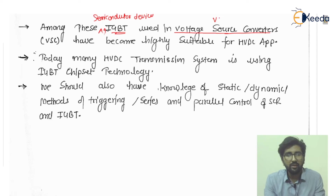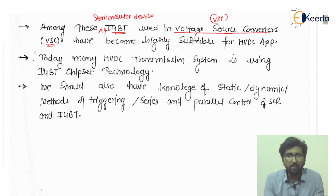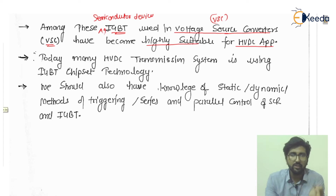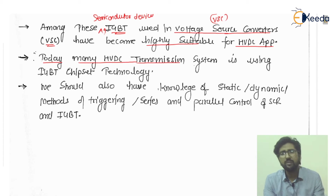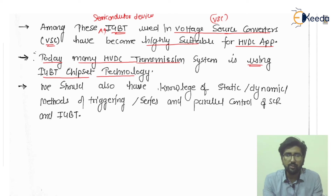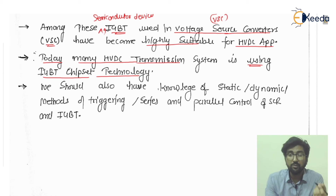In the voltage source converter, that is the VSC, the IGBT has become highly suitable for HVDC applications. Today, many HVDC transmission systems are using the IGBT chipset technology, due to its advantages over the thyristor and GTO.